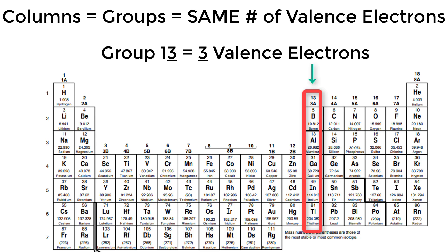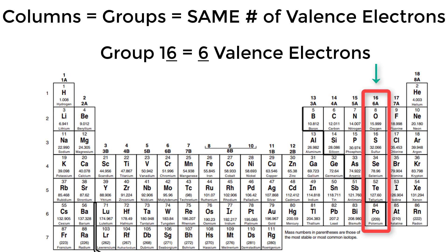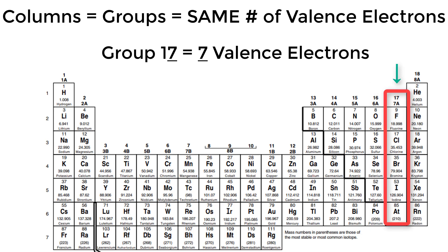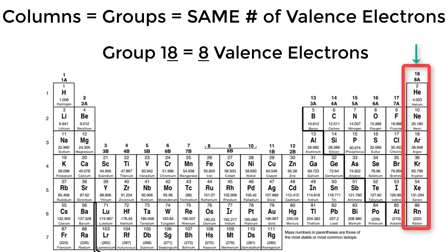It picks right back up with group 13, though. Group 13 has three valence electrons. 14 has four. 15 has five. 16 has six. 17 has seven. And you guessed it, 18 has eight.